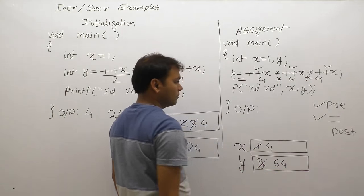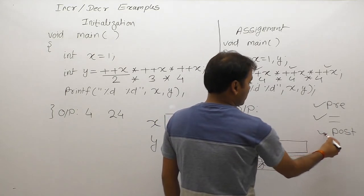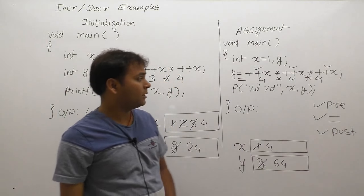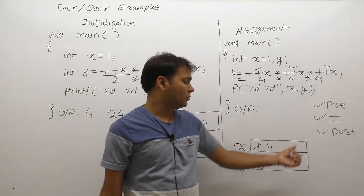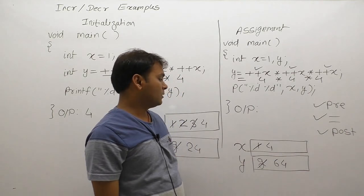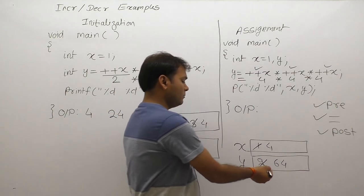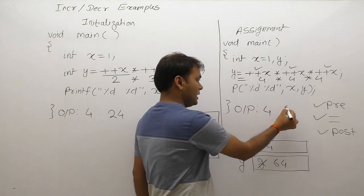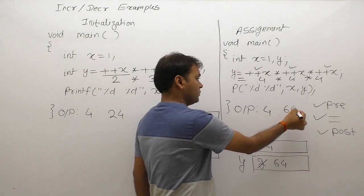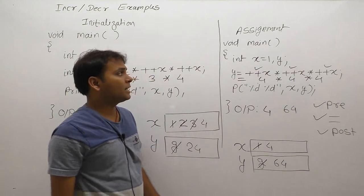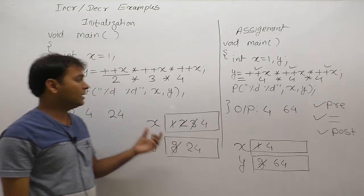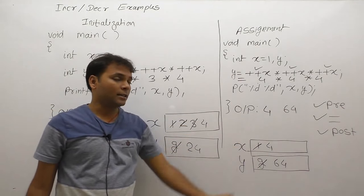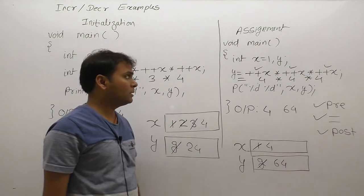After that, post operations — there are no post operations. So the final result of x and y is 4 and 64. This is the output of that expression regarding initialization rule and regarding assignment rule.